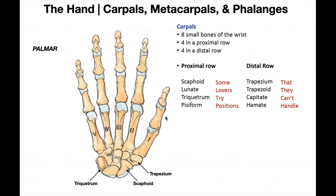With the thumb, notice there are only two phalanges — a proximal phalanx and a distal phalanx. So do we have to specify proximal and distal with the thumb's interphalangeal joint? No, we don't. Not only do we not have to, we can't — because there's only one of them. So in the thumb or pollux, between the distal and proximal phalanges, this would just be the first interphalangeal joint.